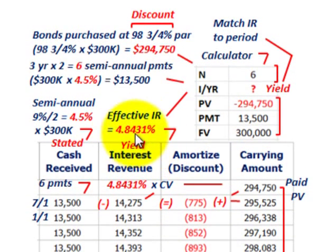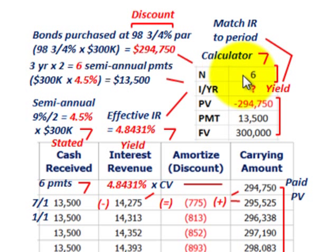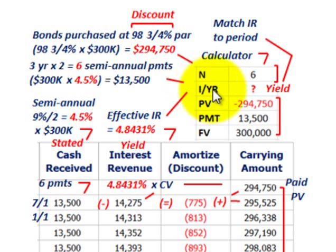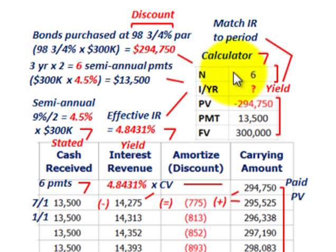To determine the effective interest rate or yield rate, you use your calculator. You can also use Excel functions. The key calculator functions are: N for the number of periods, I for the interest rate, PV for present value, PMT for the payment, and FV for the future value.